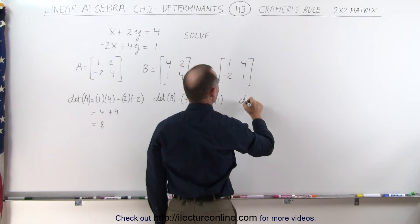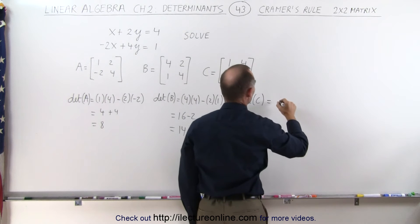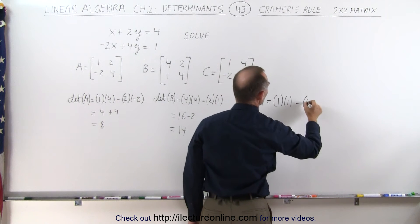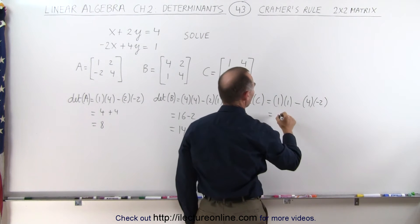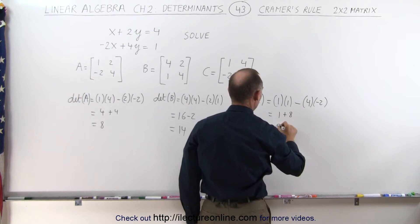The third determinant, determinant of C, is equal to the product of those two, 1 times 1, minus the product of those two, which is 4 times -2. So that becomes 1 minus, or that would be plus 8, which is 9.